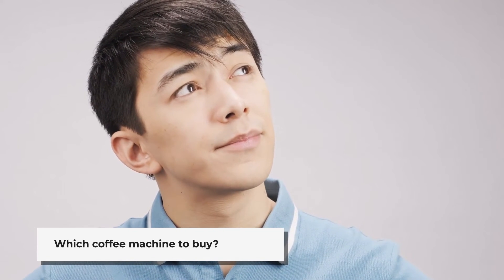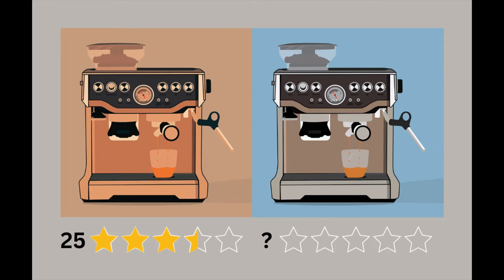Assuming you don't have any other choices and need to make a purchase, would you buy Machine A or B? In this scenario, you can expect an ambiguity-averse individual to choose Machine A, as this machine is okay and would do the job. Of course, Machine B could turn out to be superior to Machine A, but because of the ambiguity, the individual leans towards Machine A.